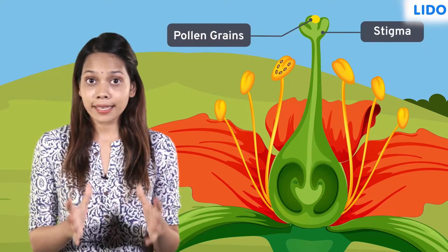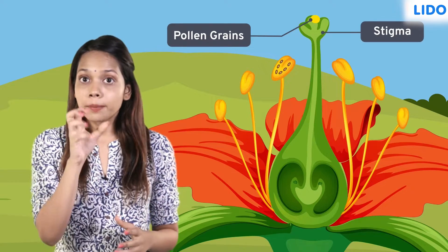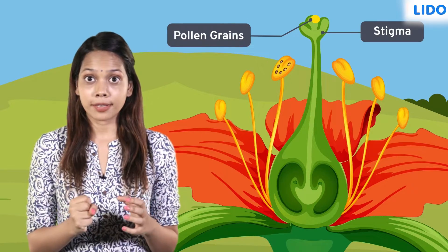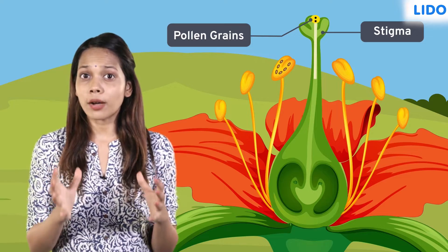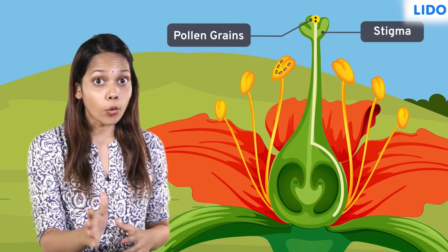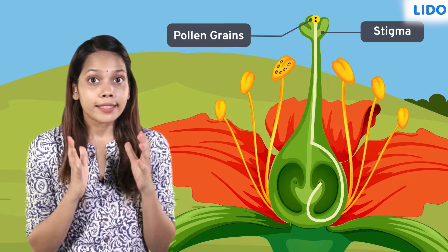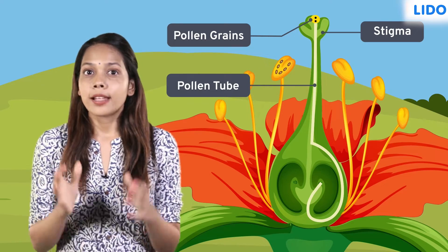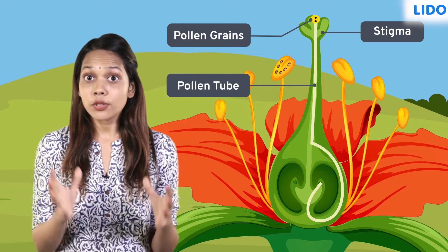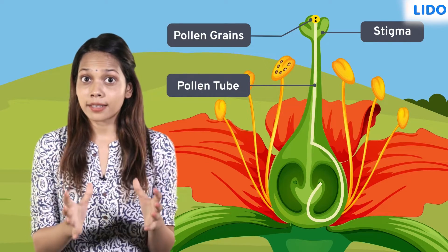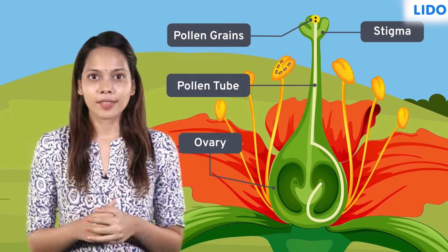Once the pollen grain is at the stigma, it absorbs moisture from its surface and develops a tube down the style towards the ovaries. This tube is known as the pollen tube. The tube continues to grow until it enters the ovules in the ovary.